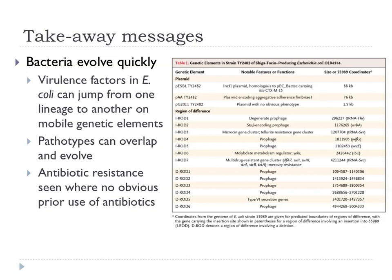Here's our list of the various differences between our strain and 55989 — plasmids, various regions of difference. A worrying sign was antibiotic resistance in this strain, including extended spectrum beta-lactamase, even though no antibiotics were being used and there was no obvious way it would have been selected for in advance of the outbreak. Normally with haemolytic uraemic syndrome, you do not give antibiotics because it's thought they make the condition worse. There's a worry that antibiotic resistance is becoming so pervasive it's popping up even in places like this.